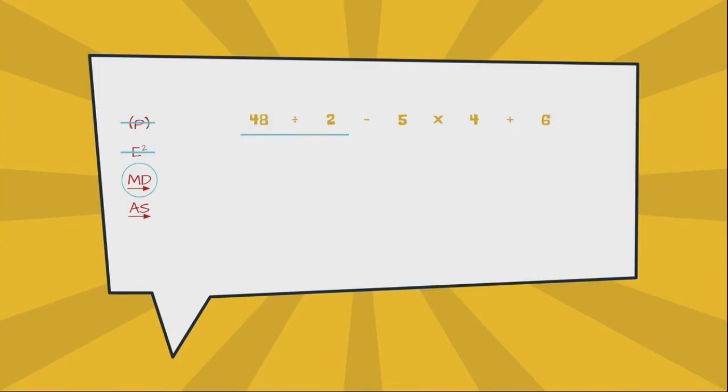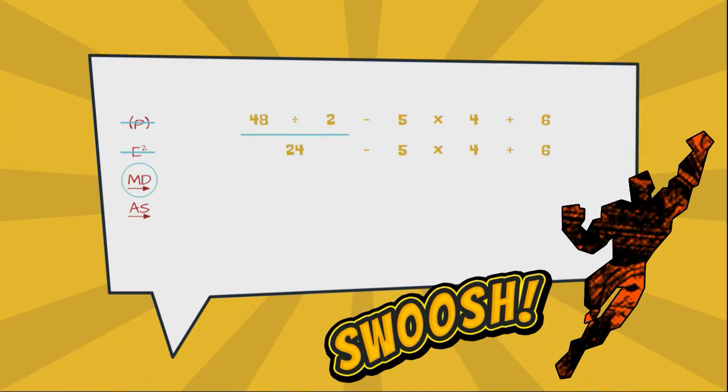So since division is on the left hand side of the problem, we're going to do that first. 48 divided by 2. If you have to go off to the side to solve that you certainly could. If you needed to count by twos you certainly could, but the answer is 24. Again, I'm going to put that under the line. I'm not going to write an equal sign anywhere on my paper. Most important step: bring everything else down.